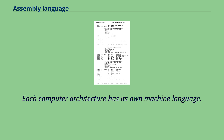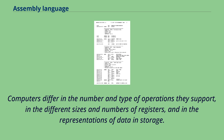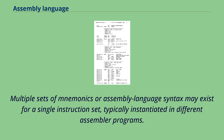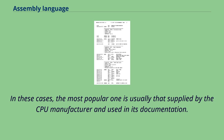Each computer architecture has its own machine language. Computers differ in the number and type of operations they support, in the different sizes and numbers of registers, and in the representations of data in storage. While most general-purpose computers are able to carry out essentially the same functionality, the ways they do so differ, and the corresponding assembly languages reflect these differences. Multiple sets of mnemonics or assembly language syntax may exist for a single instruction set, typically instantiated in different assembler programs. In these cases, the most popular one is usually that supplied by the CPU manufacturer and used in its documentation.